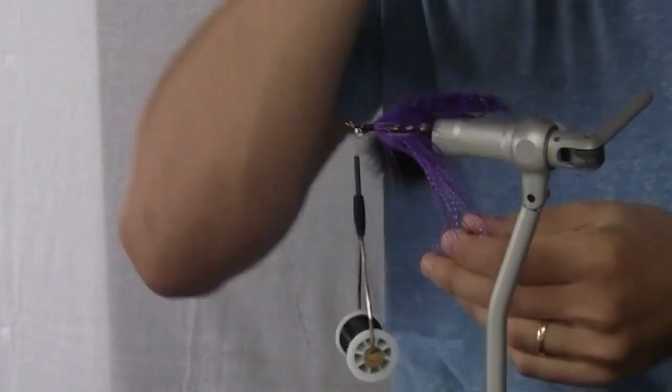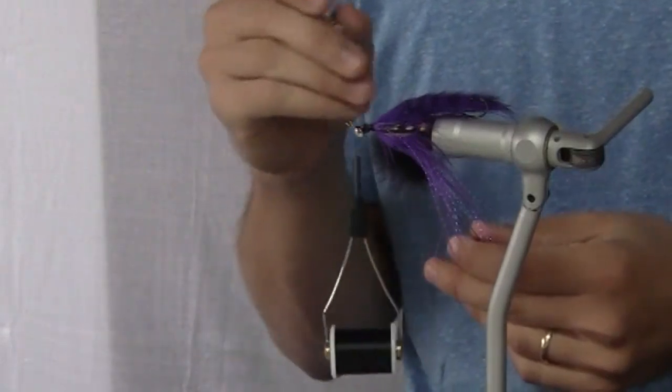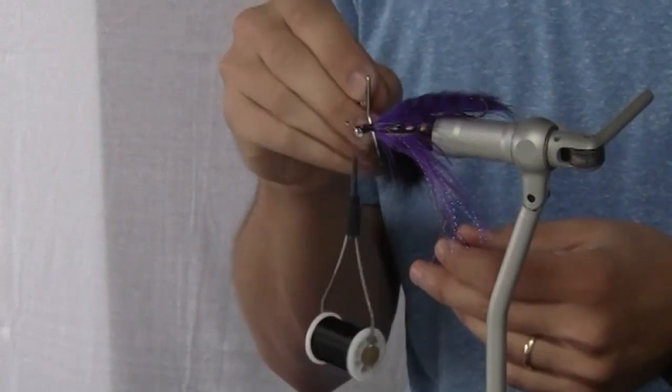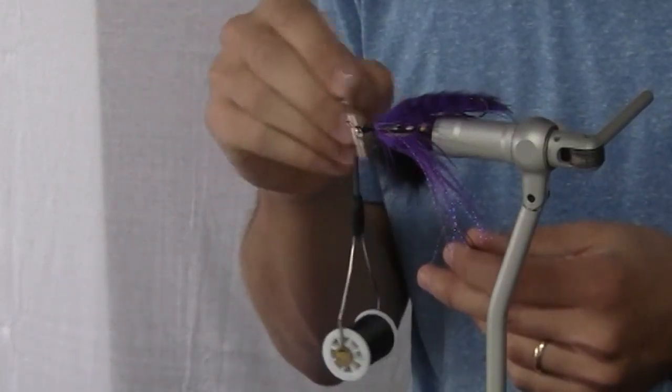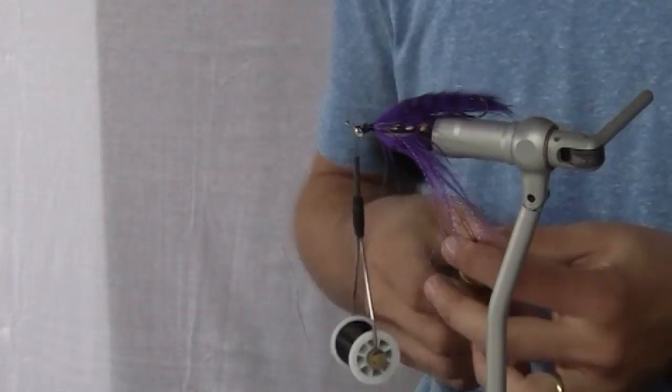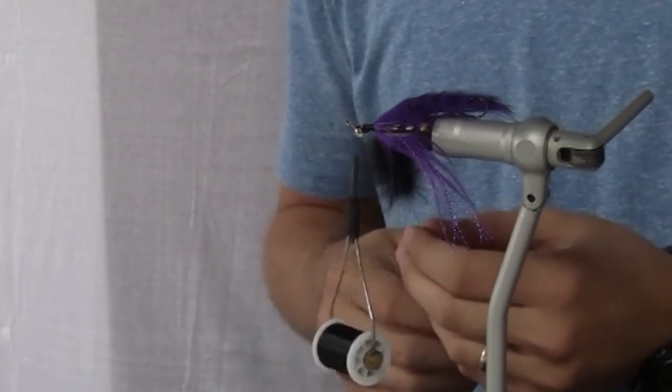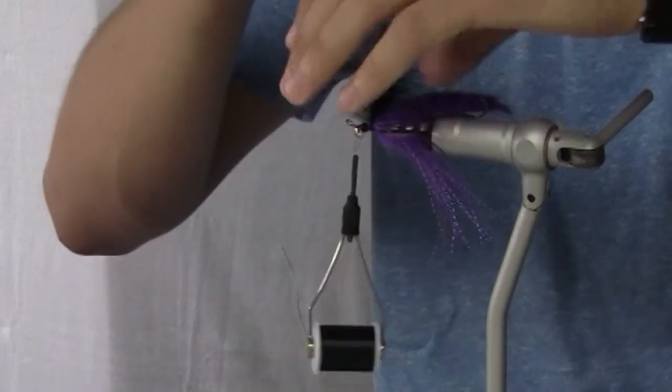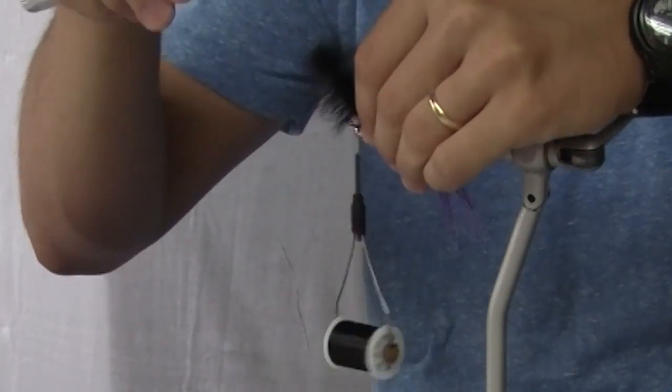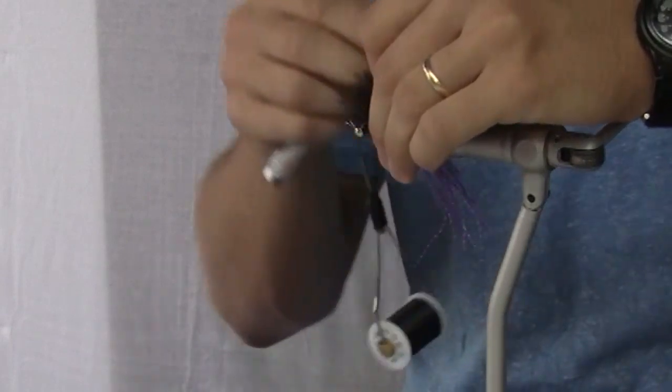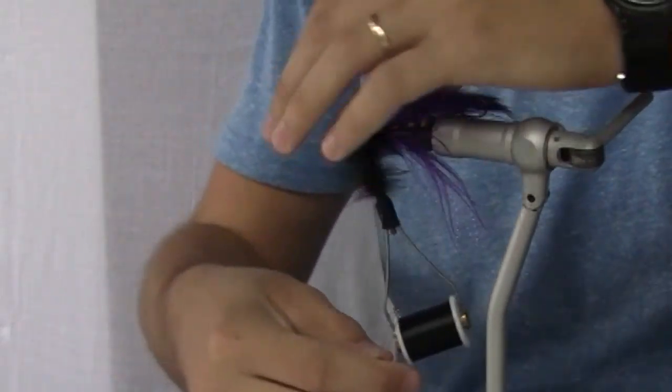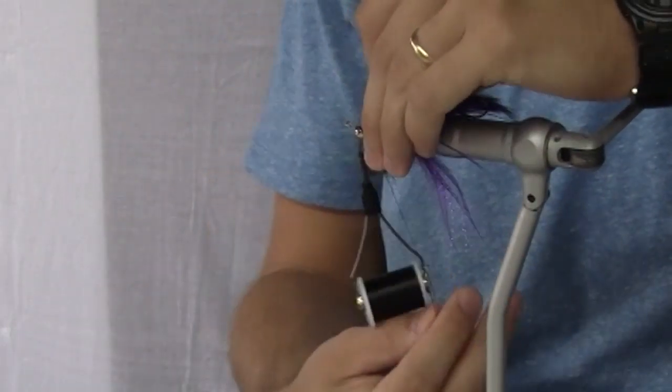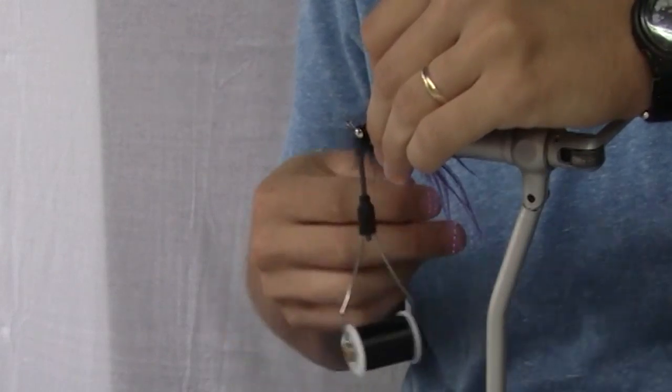What you can do is if any fibers get placed, you can kind of just tease it out with your bodkin, wet finisher like I'm using, pretty much anything that you feel is going to do the trick. So now that we've got that done, we are going to start wrapping this rabbit hackle around in a forward progression to the eyes.